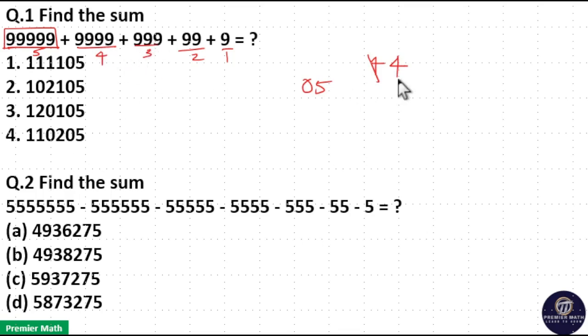Again 3 into 9 is 27. 27 plus 4 is equal to 31. 3 carry over.